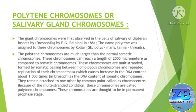Polytenic chromosomes, or salivary gland chromosomes: these giant chromosomes were first observed in the cells of salivary glands of dipteran insects by E.G. Balbiani in the year 1881. The name polyteny was assigned to these chromosomes by Köller — from the Greek word 'polys' meaning many, and 'taenia' meaning threads.